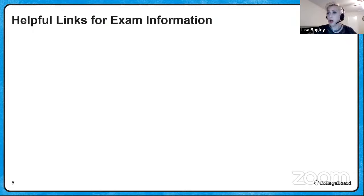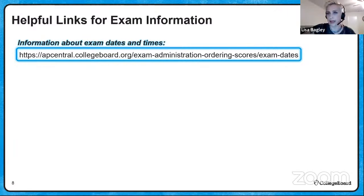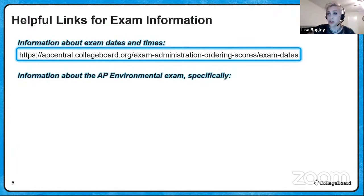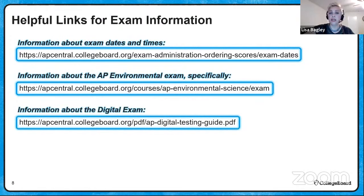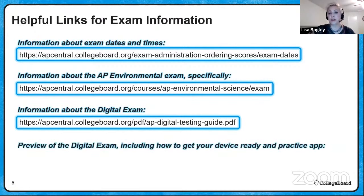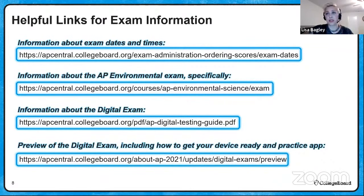Here are some helpful links for exam information — you might want to screenshot this. For information about exam dates and times, head to the College Board website. For information specifically about our exam, go to the course section of AP Central. For information about the digital exam, take a look at the AP Digital Testing Guide — it's a PDF file that tells you everything you need to know. To preview the digital exam and get your device ready, use the practice app link. These are all super helpful links and you can find them via a search as well.